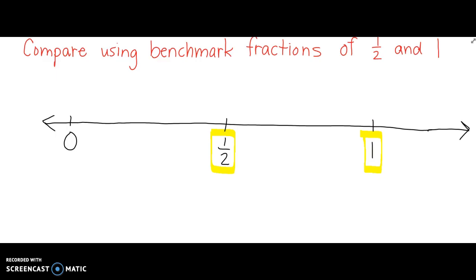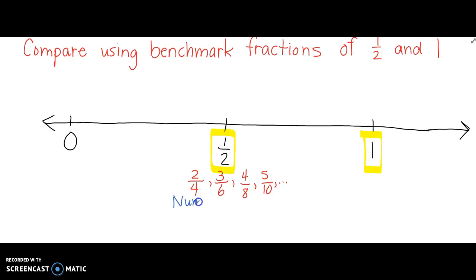Let's start with one half. What other names do we know for one half? I know that two fourths is one half, because if I multiply one half times two over two, I have two fourths. I know that three sixths is a half, four eighths is a half, and five tenths is a half. I could keep going and going naming other halves. What I know about these fractions is that all of these numerators are half of their denominators.